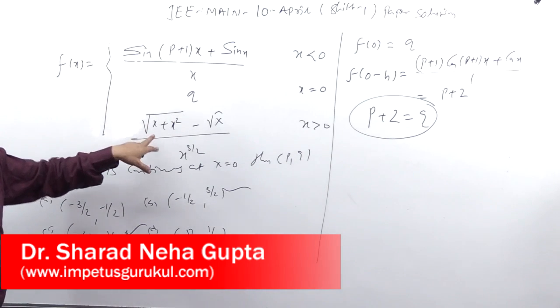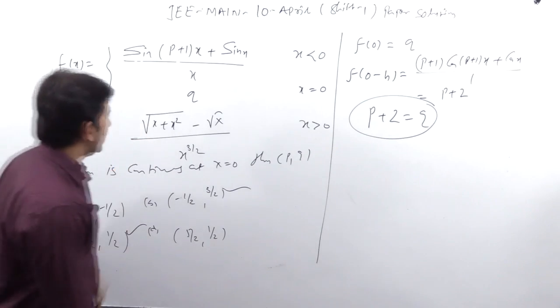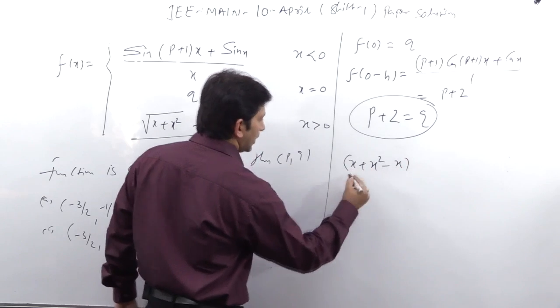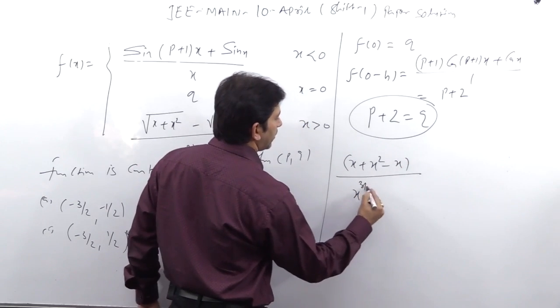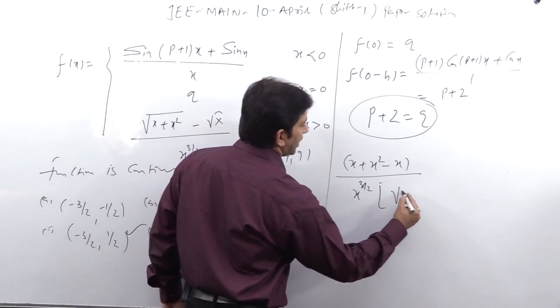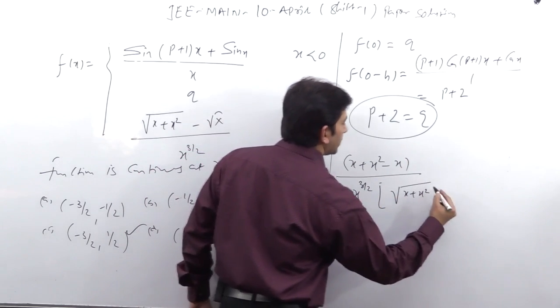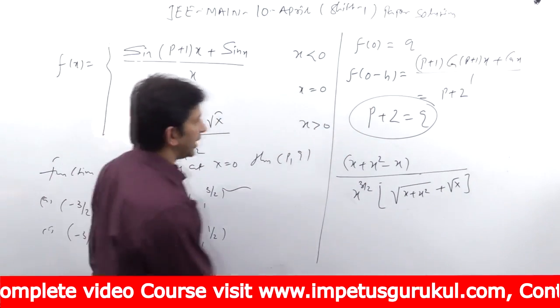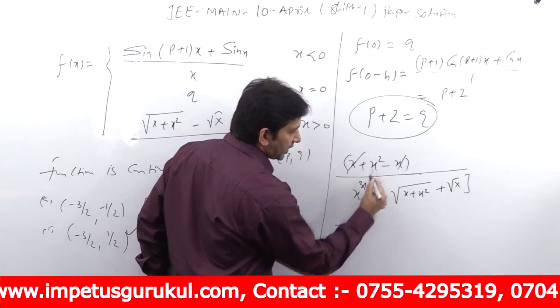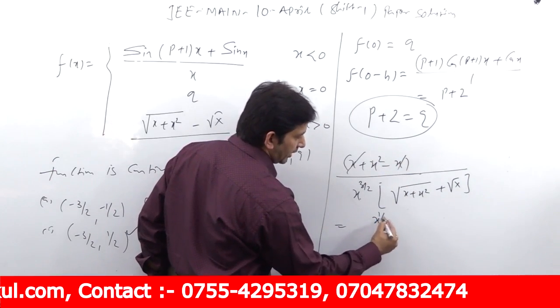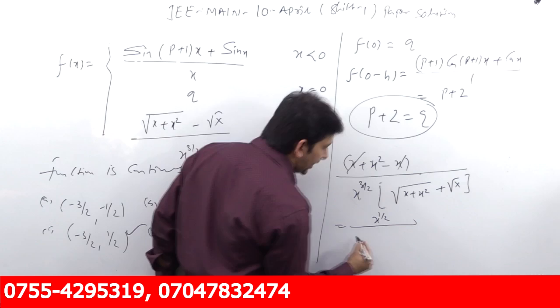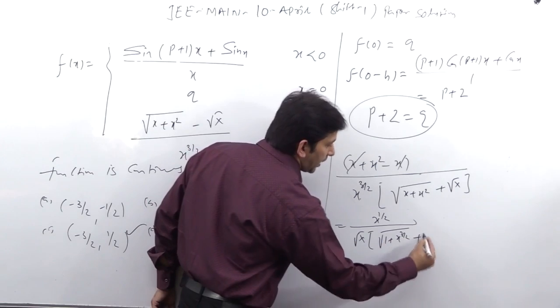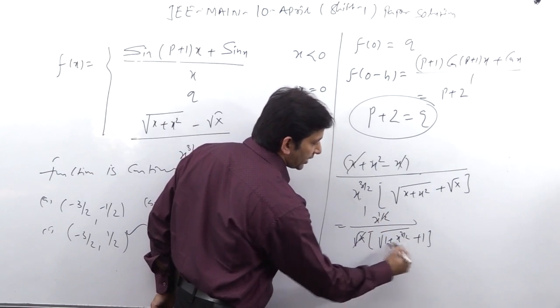In order to differentiate, whether we have time that 1 by 2 into (root(x + x²) - x) upon x to the power 3 by 2. This cancel here is the power half, root x, so you can get root(1 + x) to the power 3 by 2 plus of 1.